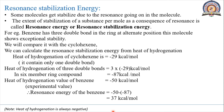For example, benzene has 3 double bonds in the ring at alternate positions. This molecule shows exceptional stability. Benzene is a 6-membered ring having 3 double bonds in alternate positions, and there is resonance in the benzene molecule. Due to that resonance, there is exceptional stability to the benzene molecule, and that exceptional stability is due to Resonance Energy. Now we will compare it with cyclohexane.